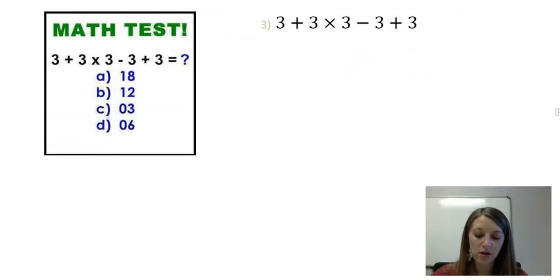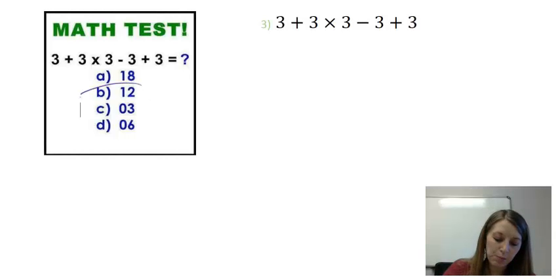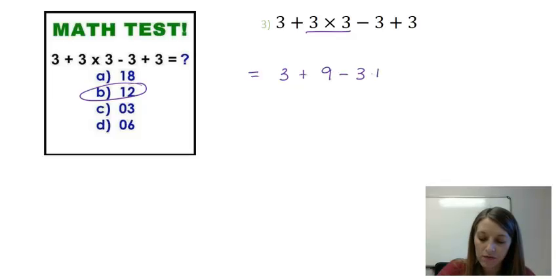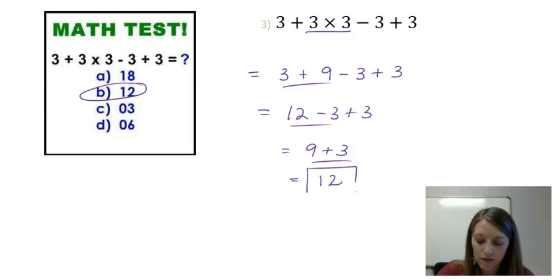And the last one that I have here, if you need to rework this using PEMDAS, now would be the great time to do that. And the correct answer to this one is B or 12. Again, no parentheses, no exponents, so I start with multiplication. 3 times 3 gives me 9. All I have left is addition and subtraction. Work it from left to right. 3 plus 9 gives me 12. 12 minus 3 gives me 9. And 9 plus 3 gives me 12.